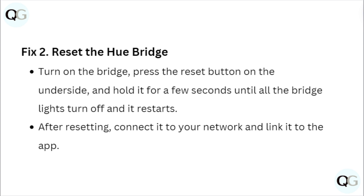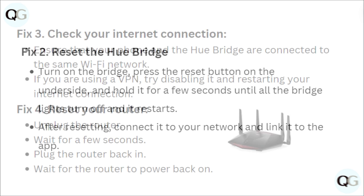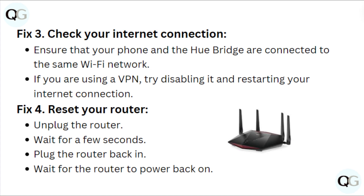After resetting, connect it to your network and link it to the app. Step 3: Check your internet connection. Ensure that your phone and the Hue bridge are connected to the same Wi-Fi network. If you are using a VPN, try disabling it and restarting your internet connection.